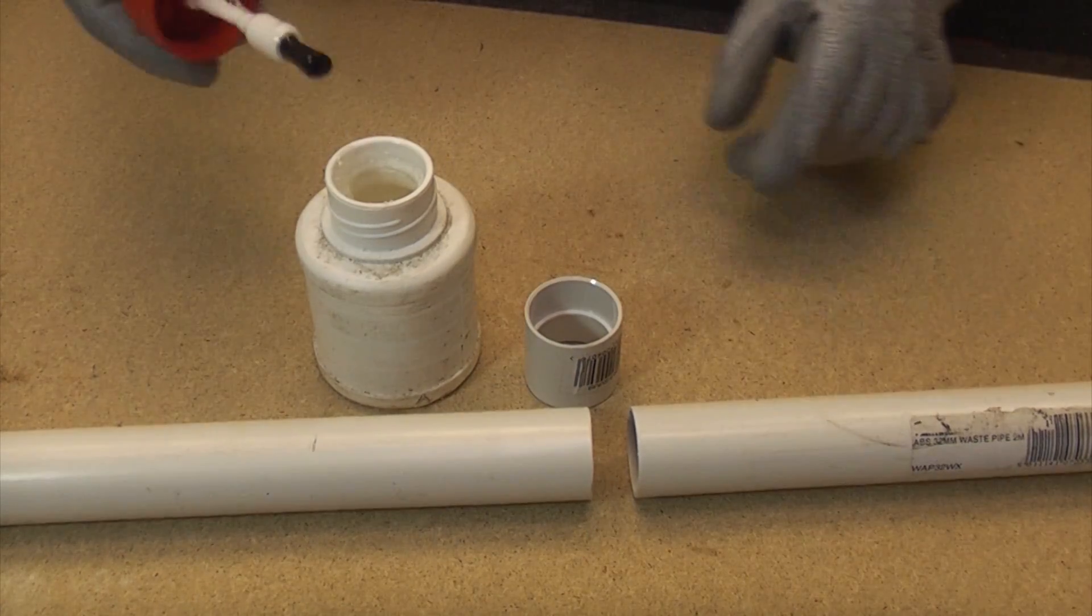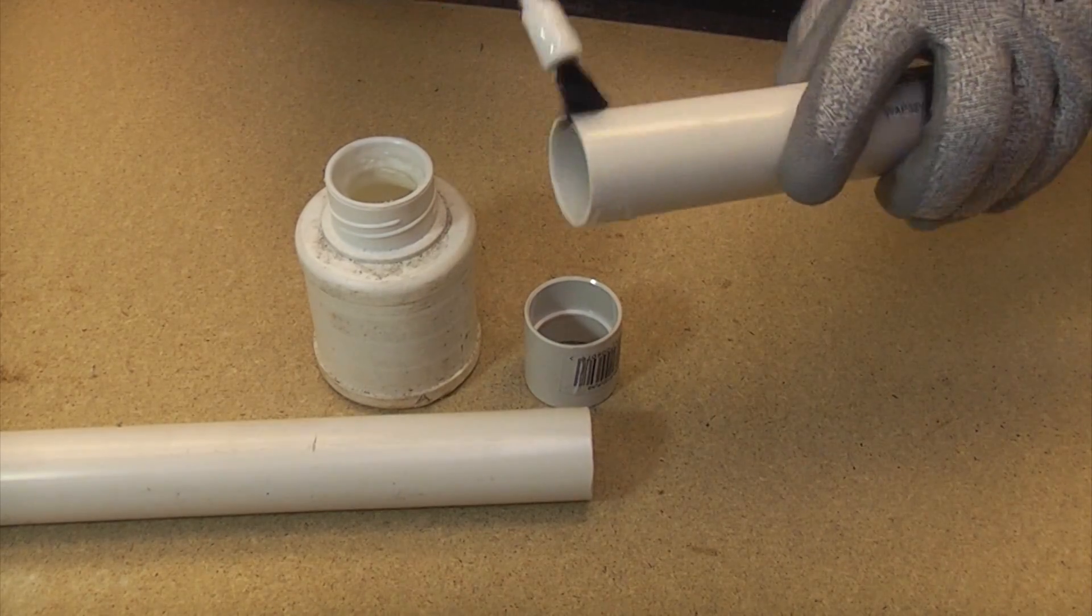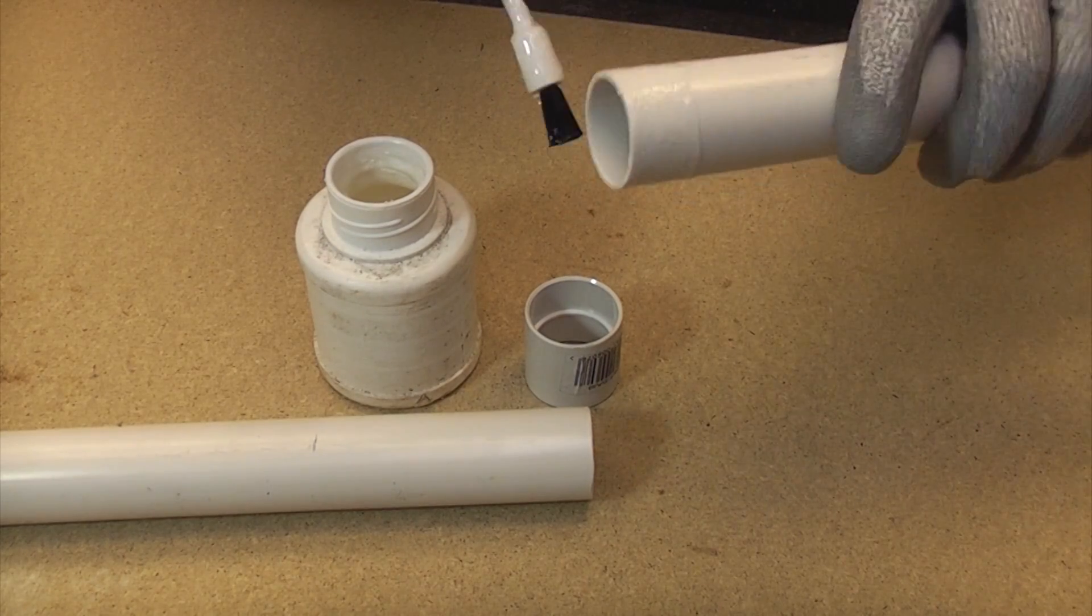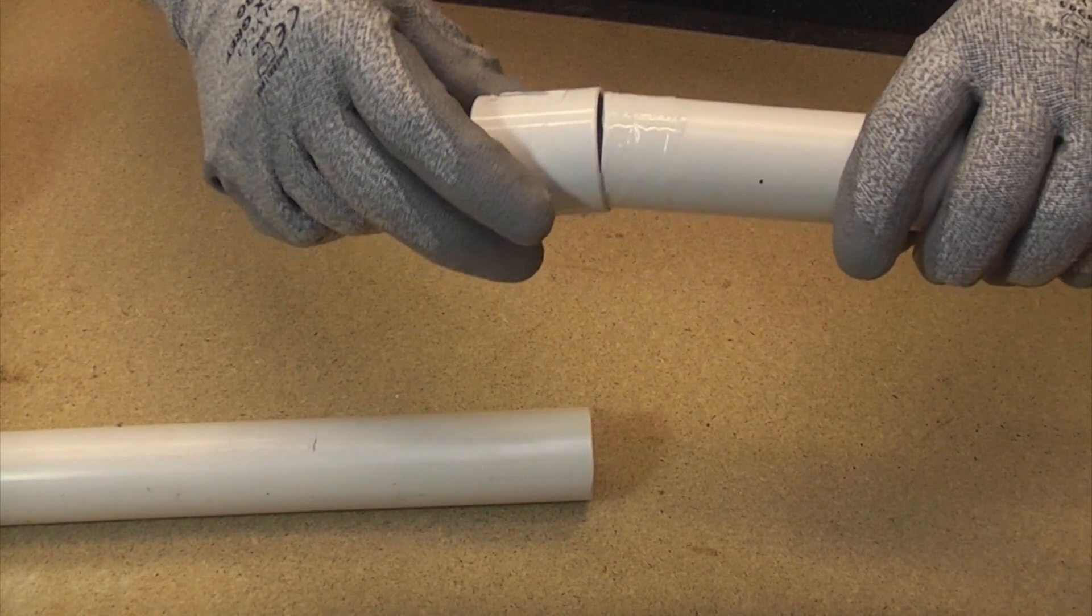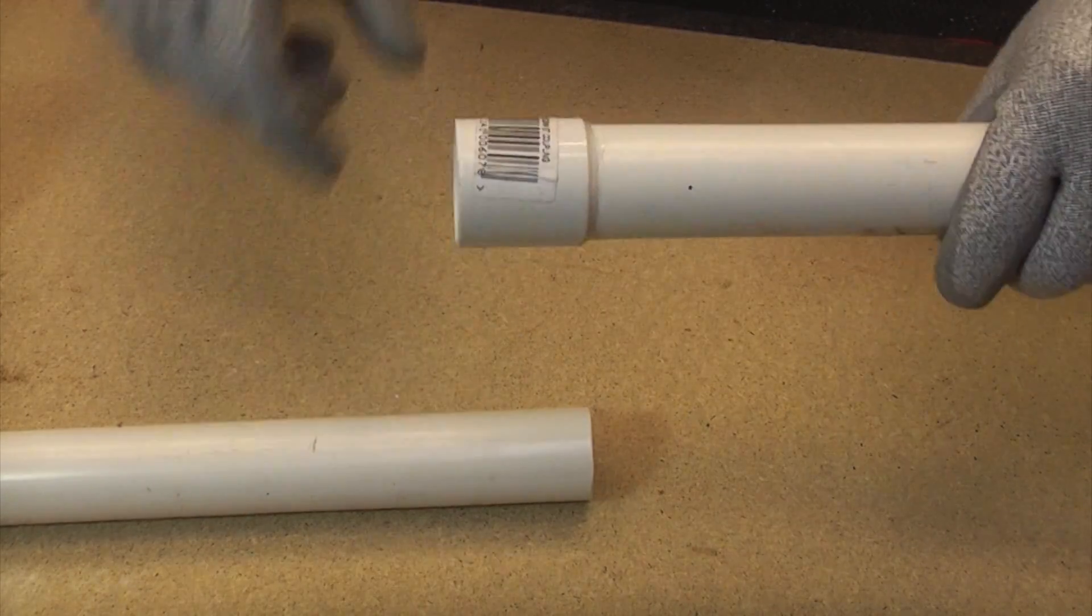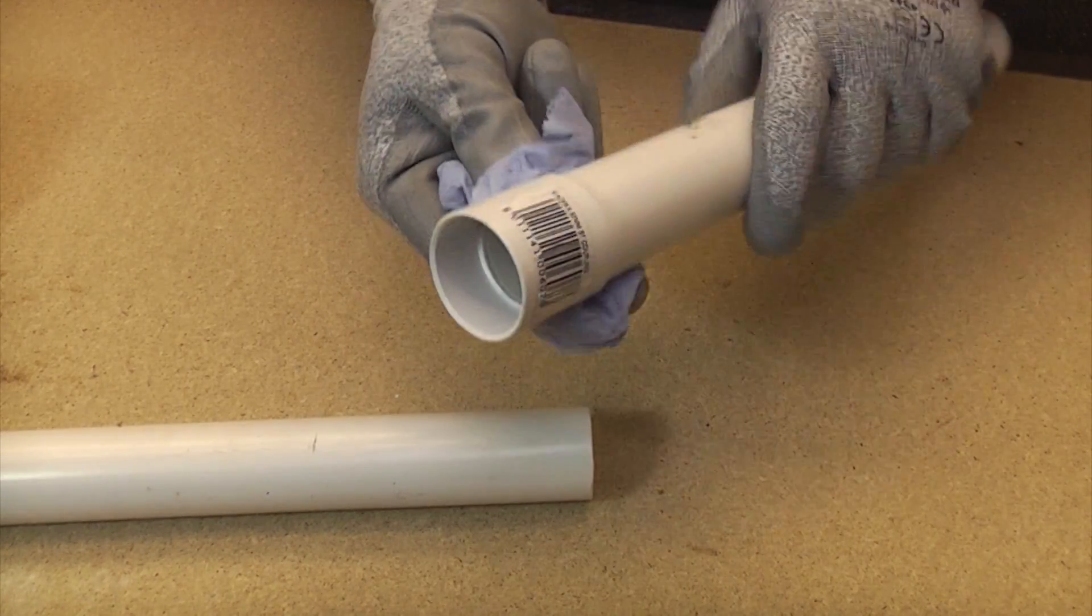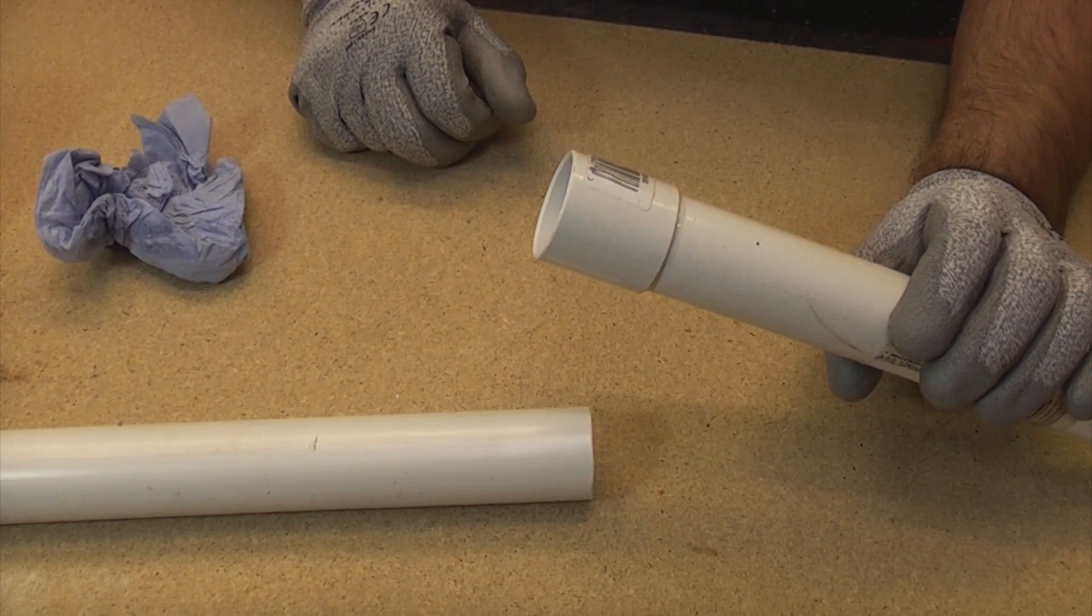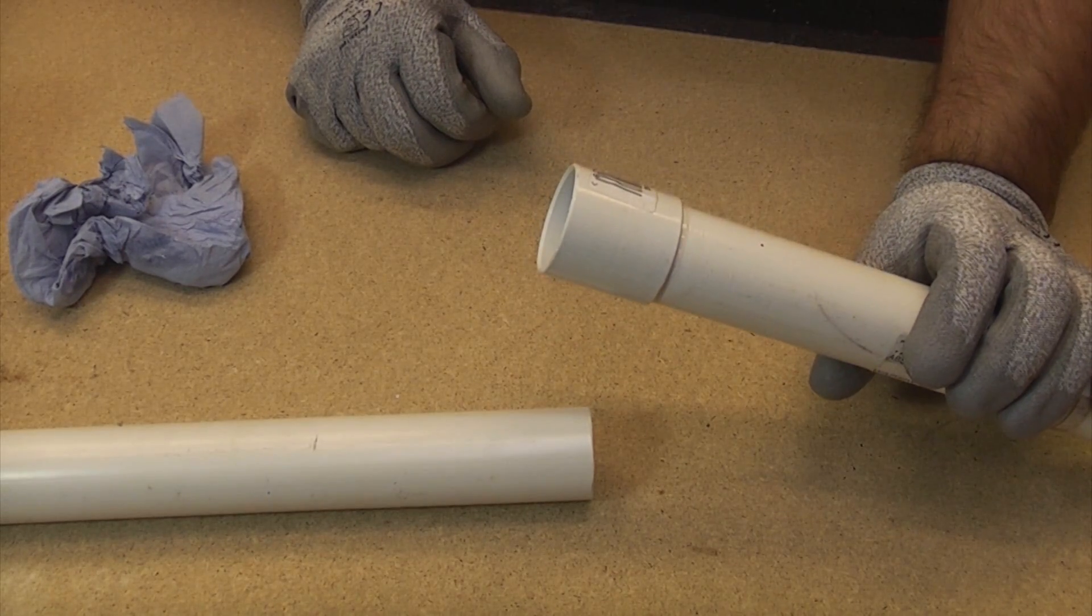Now all we need to do is take the solvent and apply it around the edge of the pipe. Then take your fitting and push it in with a twisting motion, pushing it all the way in. You can then wipe any excess solvent off. If you leave that for five minutes, it'll be almost impossible to remove because the solvent will have melted the two components together.